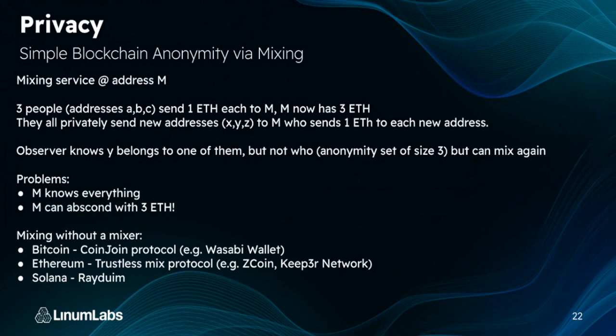The most simple way to get private transactions on a public blockchain is through mixing. A mixing service at address M receives one ETH each from addresses A, B, and C. M has three ETH. They all privately send new addresses X, Y, and Z to M, who sends one ETH to each new address. An observer knows address Y belongs to one of those three people, but not who — a one-in-three chance. Mixing again and again makes it more truly anonymous. However, M knows everything and can abscond with three ETH — you have to trust that M is a valid mixer. So mixing isn't the best way to go about privacy.